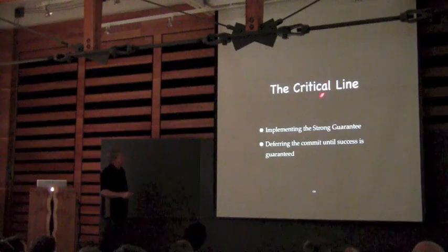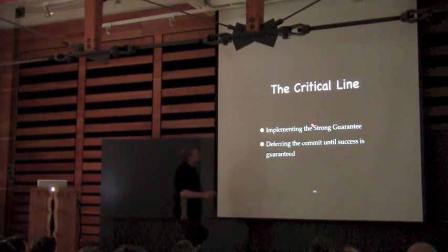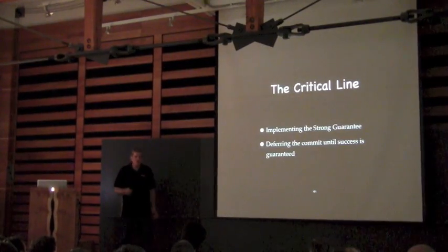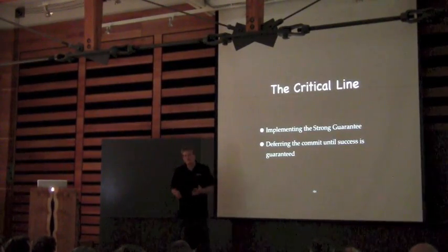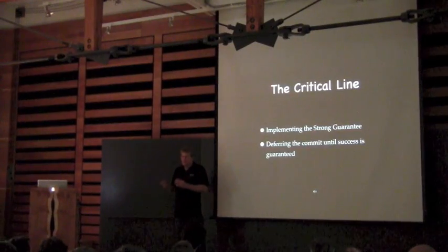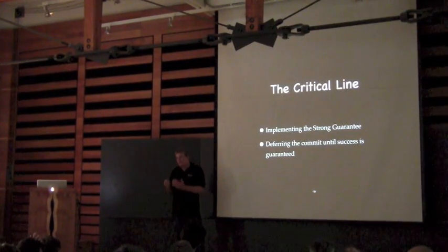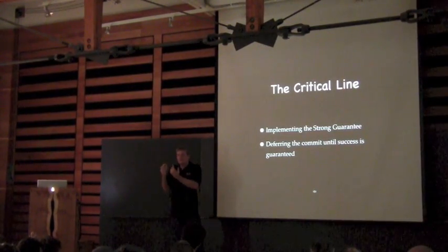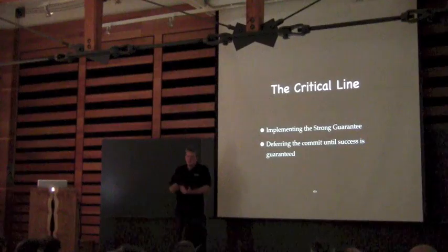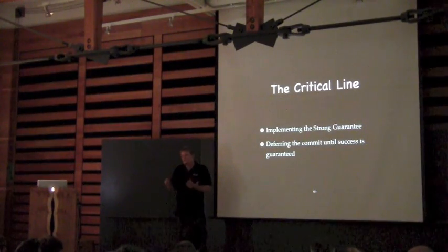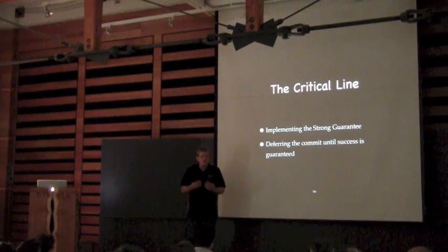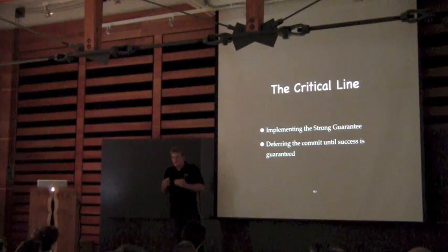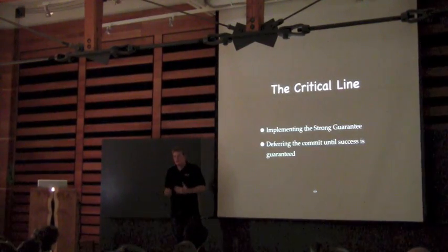So we're going to talk about the critical line. The critical line is for when you implement the strong guarantee. The point that Dave made earlier today is really important: we don't want to implement the strong guarantee if there's any cost. The interesting thing about the strong guarantee is that implementing the basic guarantee very often gives us the strong guarantee for free — the natural implementation of being exception safe at all gives you a transactional result.